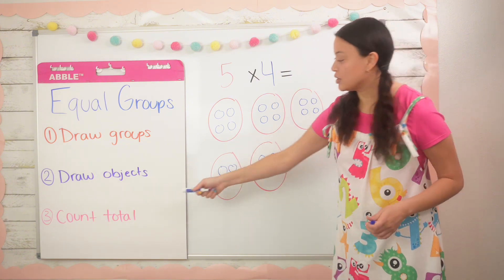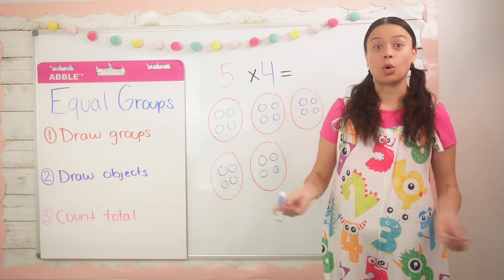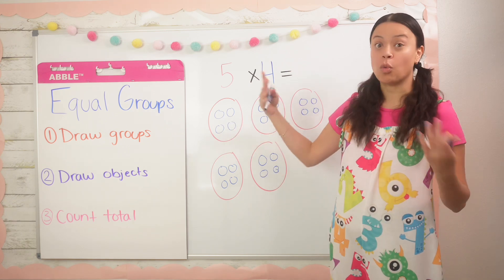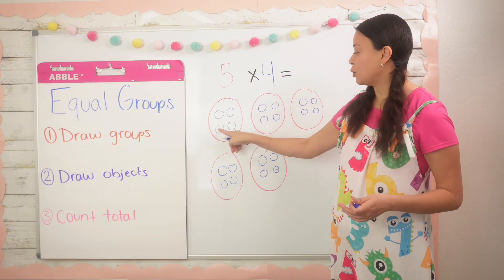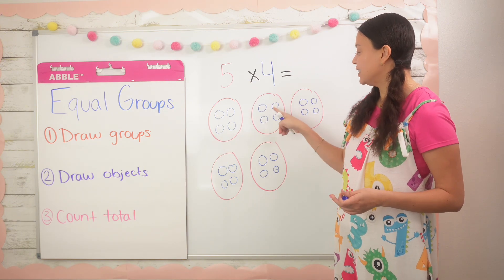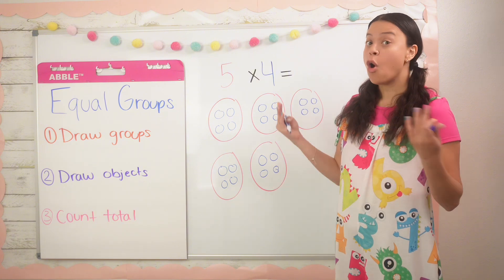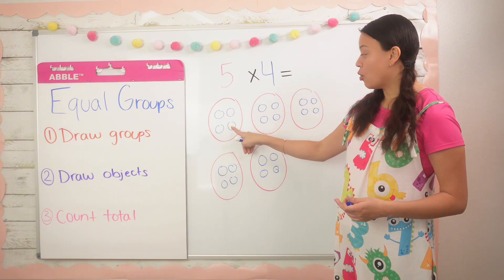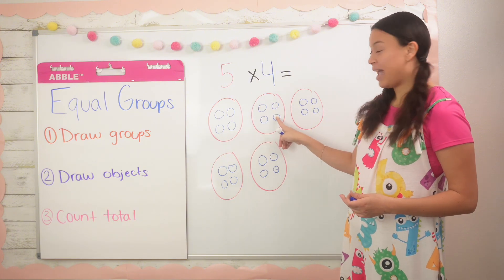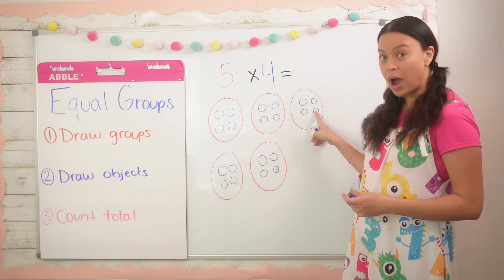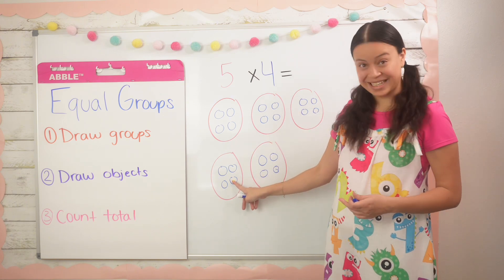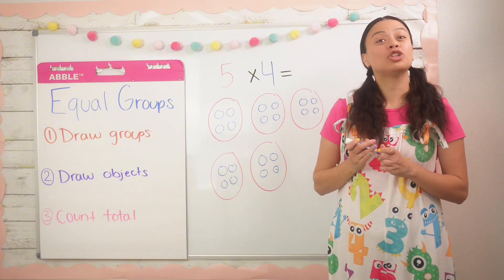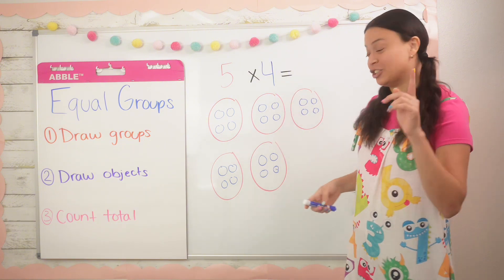Now I'm going to do step number three, which is count the total of objects. I can count one by one — one, two, three, four, five, six — all the way to the end, or I can skip count by four: four, eight, twelve, sixteen, twenty. So our total or our product is twenty.